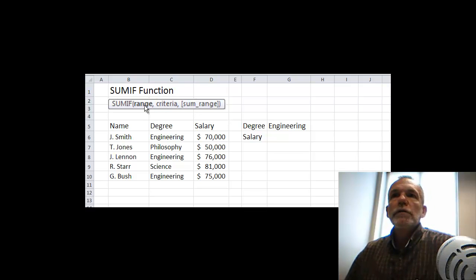What this allows us to do is look down a range for matches with a particular criteria, and then when we find a row in which there is a match, it will accumulate the sum in a third range, the sum range.